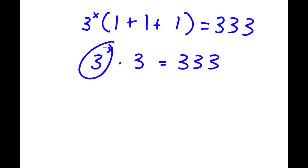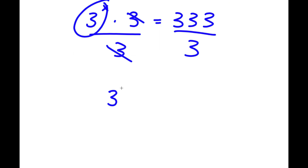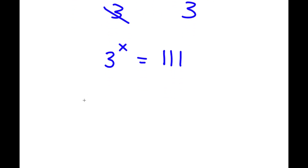Now I want to isolate three to the power of x, because this is the term that has the variable x we're solving for. To get rid of this three, I'm going to divide both sides by three. These two threes cancel out and I'm left with three to the power of x is equal to 333 divided by three, which is 111. To solve this equation, I'm going to take the log on both sides, so I have log of three to the power of x is equal to log 111.